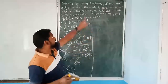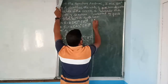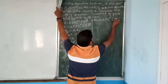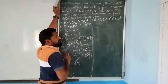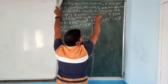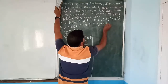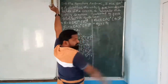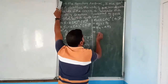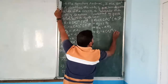Case 2: concentration of B doubles (B₂ = 2B₁) and rate doubles (R₂ = 2R₁). R₂/R₁ = k[A₁]^x (2B₁)^y / (k[A₁]^x [B₁]^y). K and A terms cancel. We get 2 = 2^y, so 2^y = 2¹, therefore y = 1.